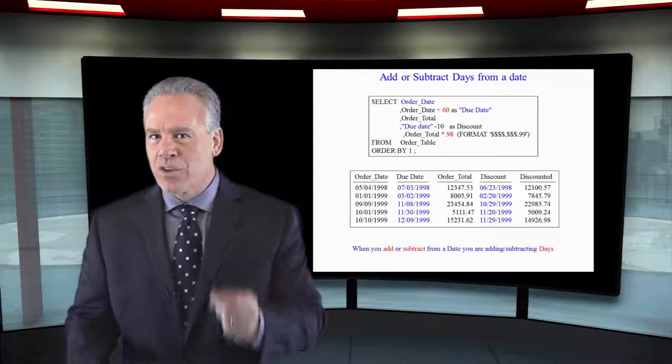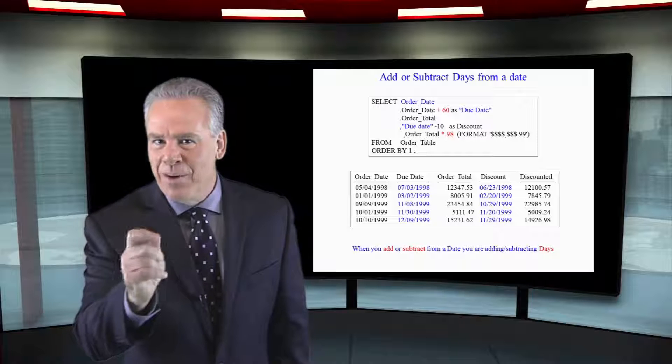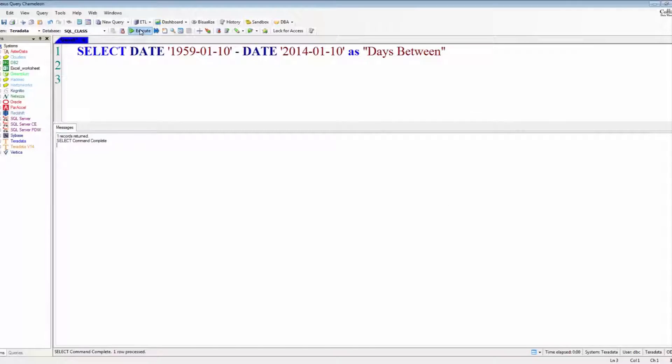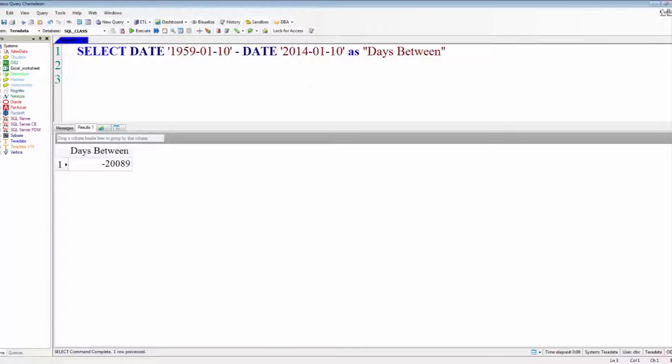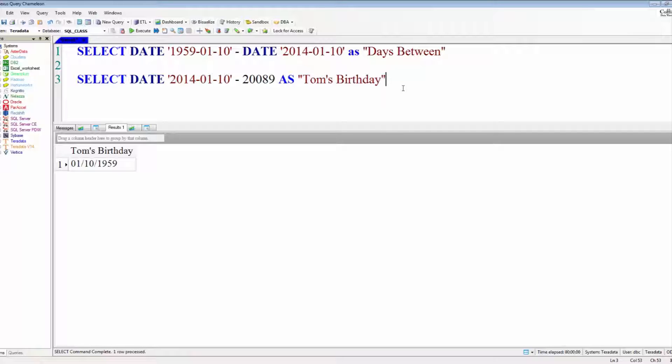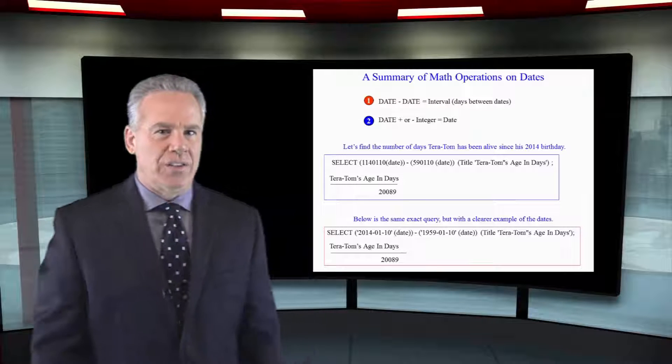If you add or subtract a number, it's a number of days. In Teradata, if you have two dates subtracted from each other, you will get a number of days between those two dates. If you have a date and you add or subtract a number, you're going to get a new date. Now let's take a look at this.